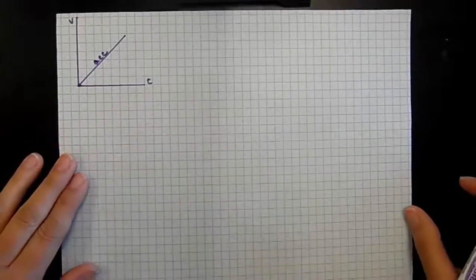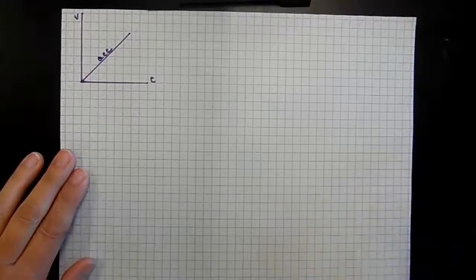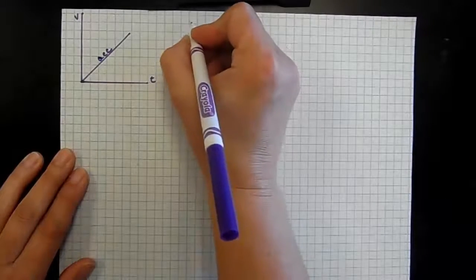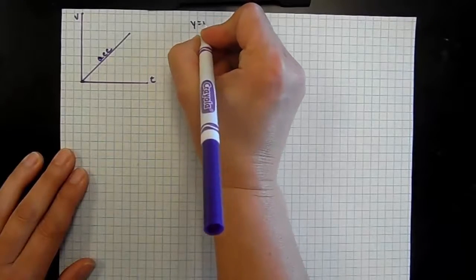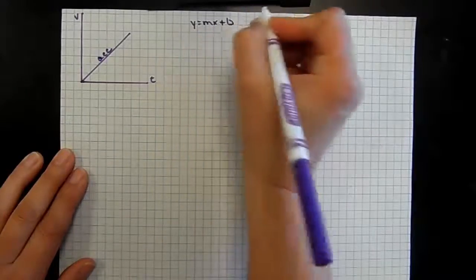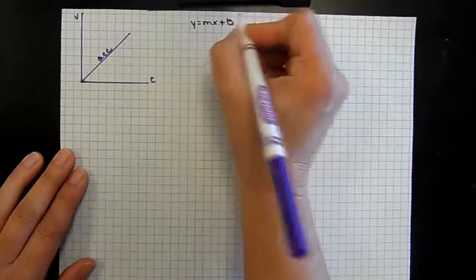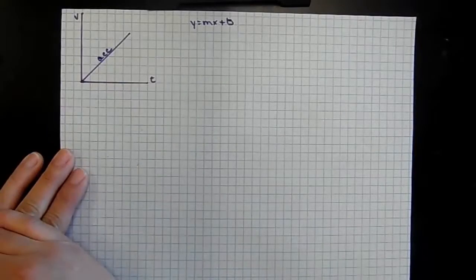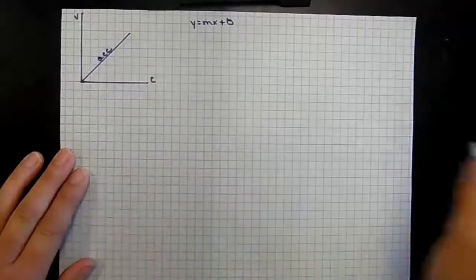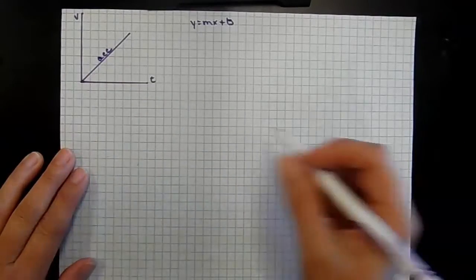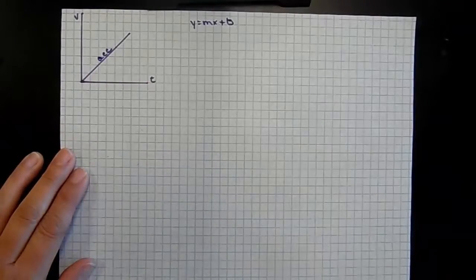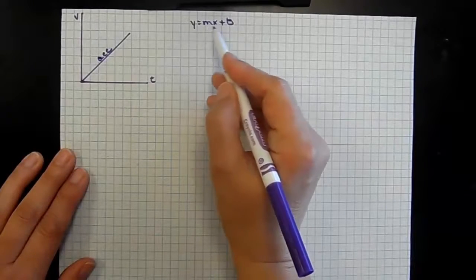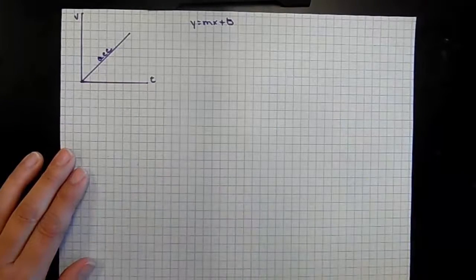Since this is linear, we can write an expression for it. We can use that slope-form equation — y = mx + b — that we keep going back to. We can use that to write a mathematical expression for this line on our velocity-time graph. We don't know any numbers, and we don't really care — we're just going to substitute in variables and worry about numbers later.